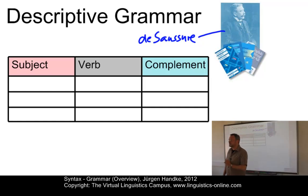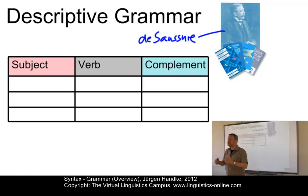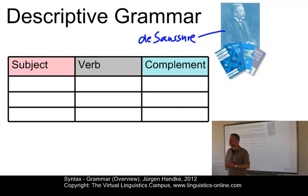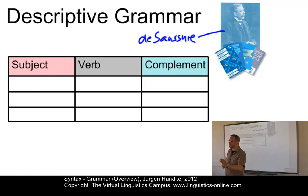Let us illustrate the difference between prescriptivism and descriptivism. What do you say when you are asked 'who is it?' — would you say 'it is me'? Or should you say 'it is I'? Well, the rule that we should say 'it is I' is a typical example of a Latin rule taken over for English. The argument runs as follows.